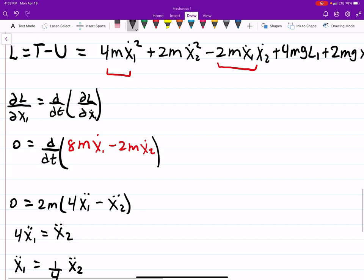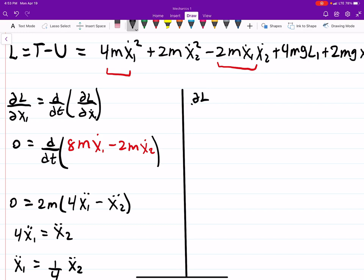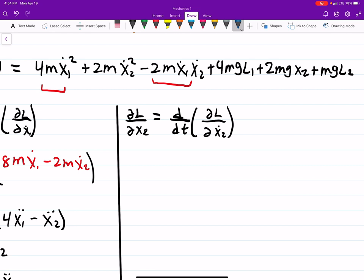So same exact equation we're just replacing x1 with x2. So there is an x2 here that's here so when I take its derivative I get just 2mg equal to d by dt.